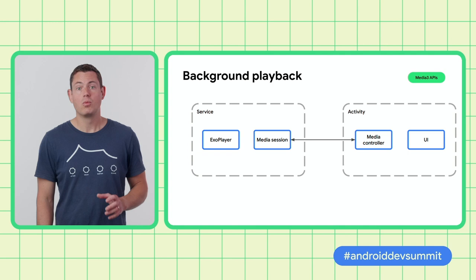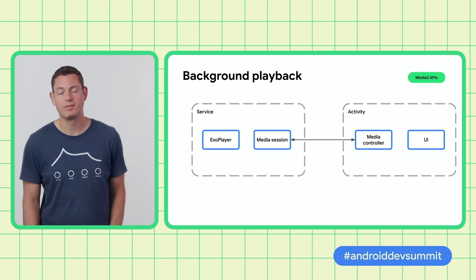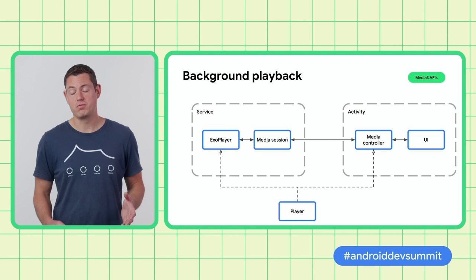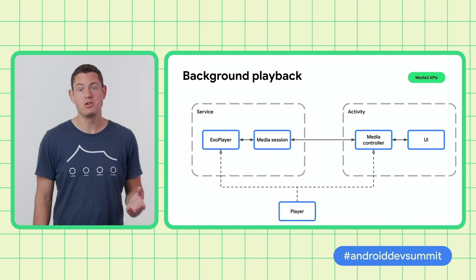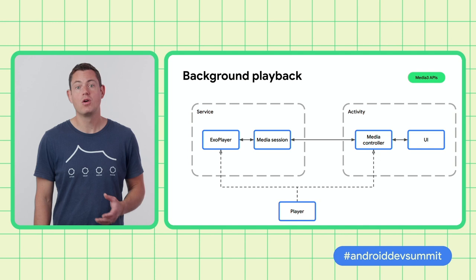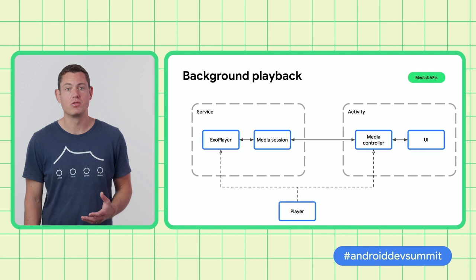With Media 3, again, we wanted to eliminate this connecting component for the media controller as well. Now, the media controller and player both implement the same player interface, and the session and UI components take this same player interface. So in summary, Media 3 has one common player interface used throughout, which is implemented by ExoPlayer and is directly compatible with media sessions. The media controller, which also implements the common player interface, works directly with the UI. This avoids a lot of unnecessary connector code, resulting in code which is easier to maintain and less prone to errors.